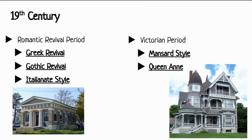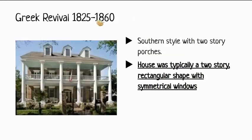For the Victorian period, we had the Mansard style, which looks a lot like the apartments right next to school. And then we also had the Queen Anne — if you guys can kind of picture the school's parking lot, think about the house that's right across the street, the pretty blue one. That is a Queen Anne style, so we're going to get into some more details about those.